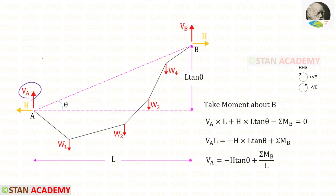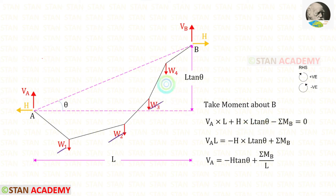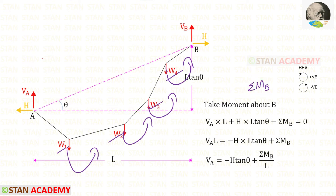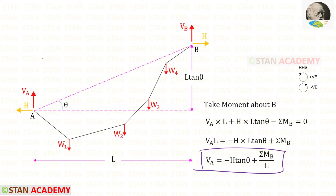Now, to find Va, let us take moment about B. Va is acting in the clockwise direction so that it will be positive and the distance is L. The horizontal thrust H is also acting in the clockwise direction so that it is also positive and the distance is L tan theta. These 4 loads are acting in the anticlockwise direction. Let us keep the summation of the moments due to these loads as sigma Mb. Since all of the loads are acting in the anticlockwise direction, sigma Mb will be negative. Let us divide all of the members by L. This L and this L will be eliminated, and this L and this L also will be eliminated. Finally, for Va, we will get this expression.